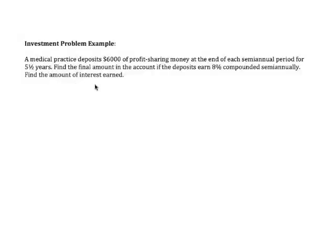In this question, we're asked to determine some things about investing money. This is an investment problem. A medical practice deposits $6,000 of profit-sharing money at the end of each semiannual period. Semiannual, of course, means every half year. They do this for five and a half years. We want to find the final amount in the account if the deposits earn 8% compounded semiannually, and then find the amount of interest earned.